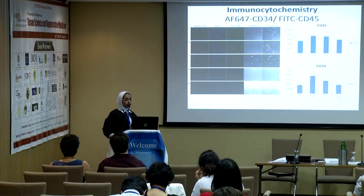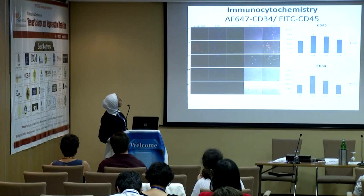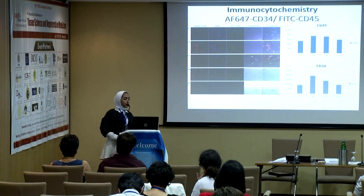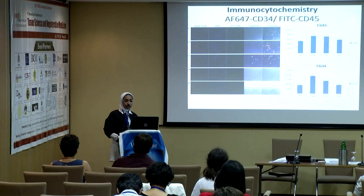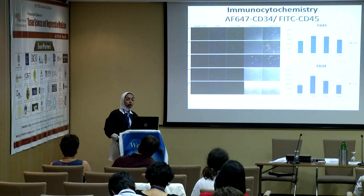The flow cytometry results were also confirmed with immunocytochemistry — though the photos may not be fully clear on the projector. The immunocytochemistry was done for CD34 and CD45, which confirmed that both markers peaked at day 14 and started to decrease throughout the erythropoiesis differentiation.